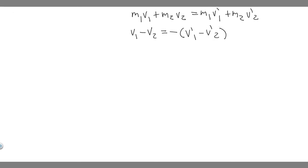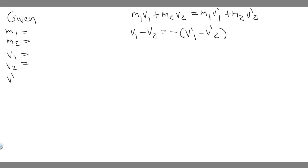First, let's lay out what we're given and label each thing. The different variables are m₁, m₂, v₁, and v₂. We don't know either of the final velocities yet — v'₁ and v'₂ — and that's what we're going to be solving for. That's what they want us to find.